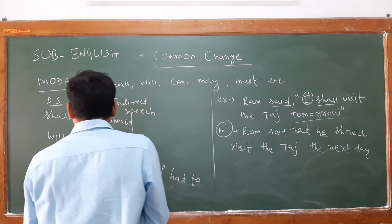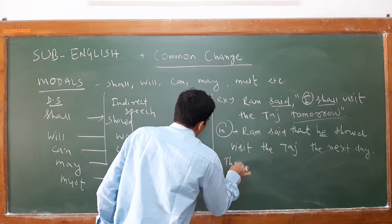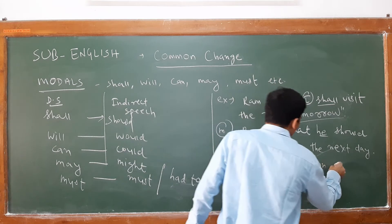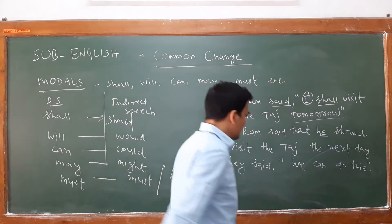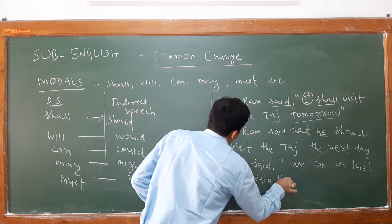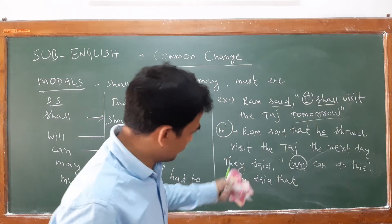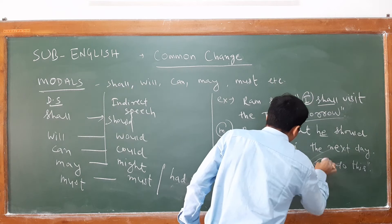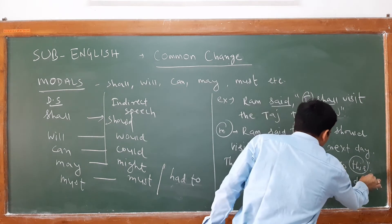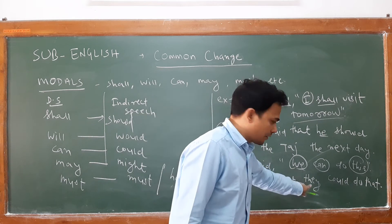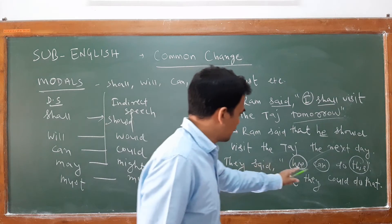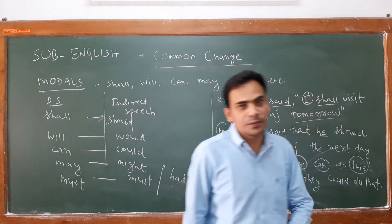Another example: They say, 'We can do this.' This is the reported sentence, so: 'They say that they could do that.' 'We' changes simply into 'they', 'can' becomes 'could', 'do' stays as 'do', and 'this' becomes 'that'. So how many changes do you notice? First, the pronoun 'we' changes to 'they'. Then 'can' becomes 'could' as per the modal lesson. And 'this' becomes 'that'. I hope these common changes are something you are able to understand.